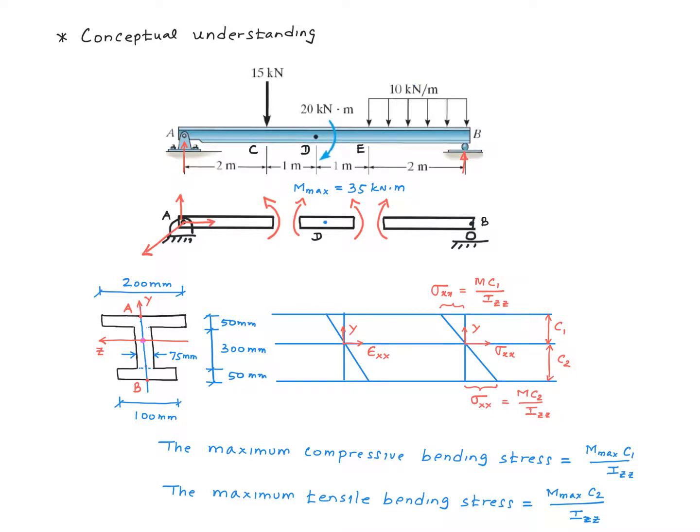So the maximum compressive bending stress would be m times c1 divided by izz, where c1 is this distance. m, of course, will be m max. And then the maximum tensile bending stress would be m times c2 divided by izz, where m again is the maximum bending moment of 35 kilonewton meter, but c2 is this distance.